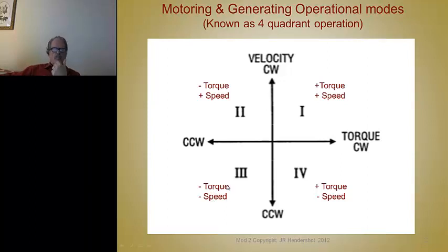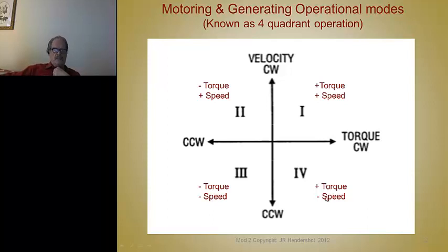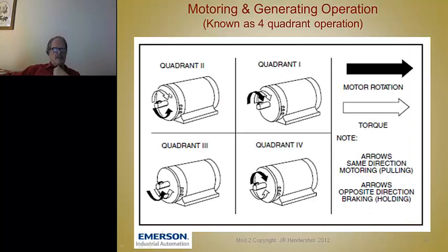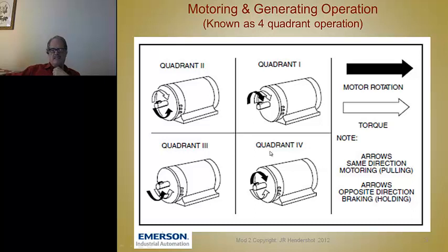Negative torque with negative speed means going backwards — like putting your car in reverse, applying reverse torque at reverse speed. Going backwards and then slowing down requires applying positive torque as speed decreases. Another way to visualize this uses shaft diagrams: in quadrant one, clockwise torque and clockwise speed; in quadrant two when braking, clockwise speed but counter-clockwise torque. These concepts need to be in the back of your mind before you design a motor.